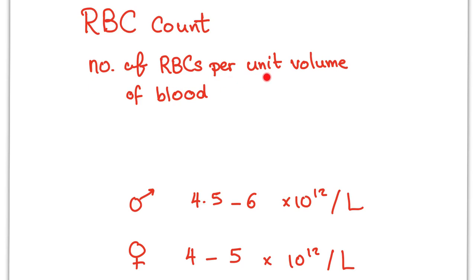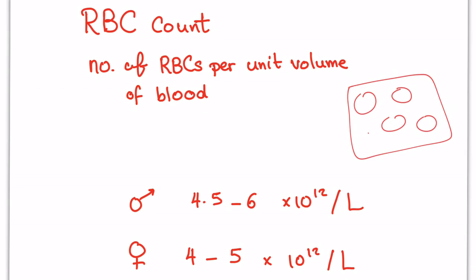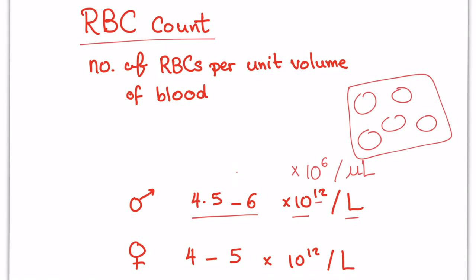The RBC count is the number of red blood cells per unit volume of blood. In males, normally you have 4.5 to 6 times 10 to the power 12 per liter, or equivalently times 10 to the power 6 per microliter — so about 5 million red blood cells per microliter. In females, it's less: 4 to 5 times 10 to the power 12 per liter.